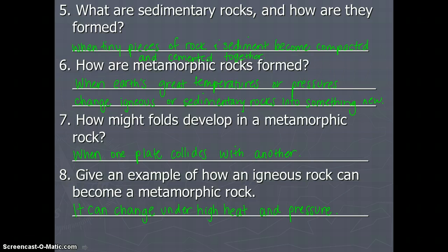Sedimentary rocks are formed when tiny pieces of rock and sediment become compacted and cemented together. And metamorphic rocks are formed when Earth's great temperatures or pressures change igneous or sedimentary rocks into something new. Metamorphic rocks can develop folds in them when one plate collides with another. And an igneous rock can turn into a metamorphic rock when there is high heat and pressure to squeeze it into a metamorphic rock.